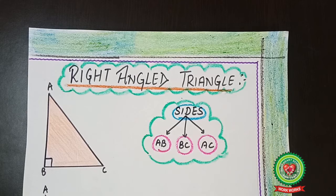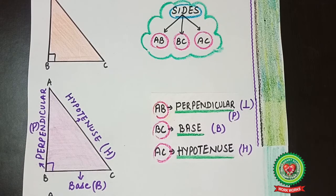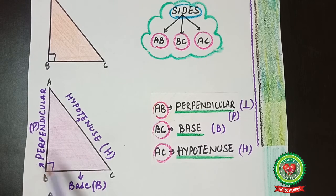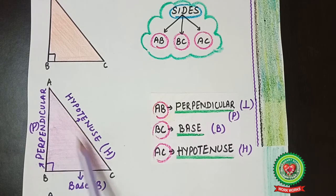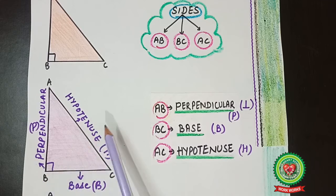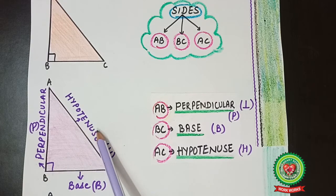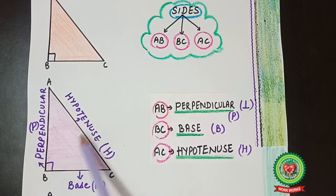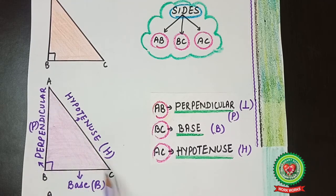These three sides of the right-angle triangle have their specific names. You need to know which angle is the right angle because it helps you to identify the important side of the right-angle triangle, that is the hypotenuse, which is the longest side. The hypotenuse is always the side opposite to the right angle. This is the AC side and can be denoted by capital H.